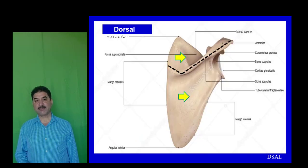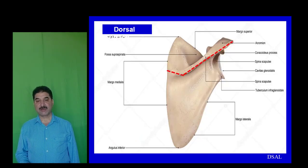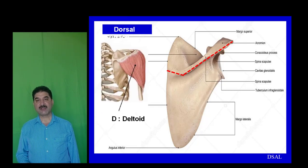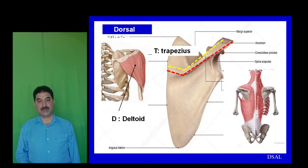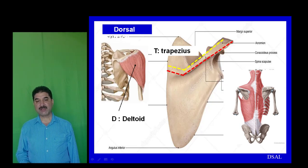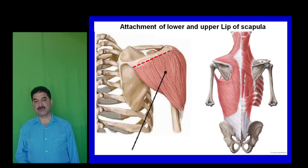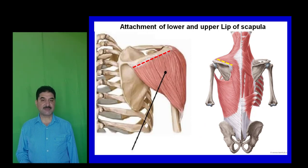The spine of the scapula has two lips. From the lower lip arises the deltoid muscle — remember D for down, D for deltoid. The upper lip gives attachment to the trapezius muscle — remember T for top. So the lower lip gives attachment to deltoid and the upper lip gives attachment to trapezius muscle.